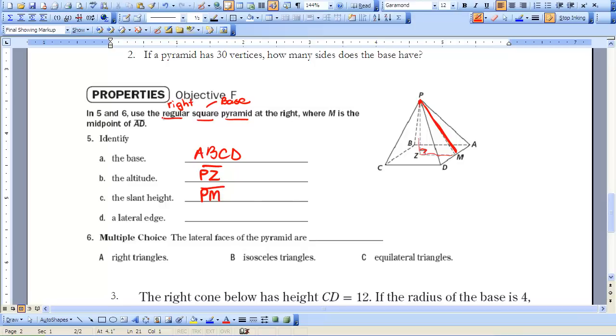The lateral edge, we have four of them: we have PC, PD, PA, and PB. Those are all the lateral edges, the edges that go from the apex to the base vertice.